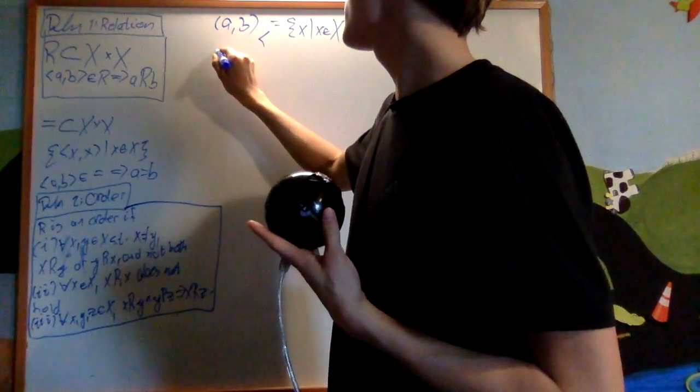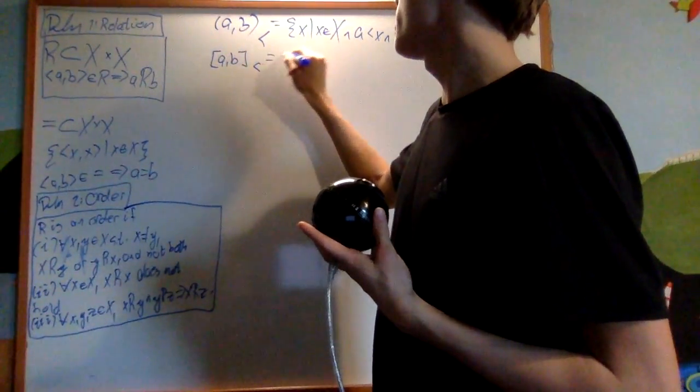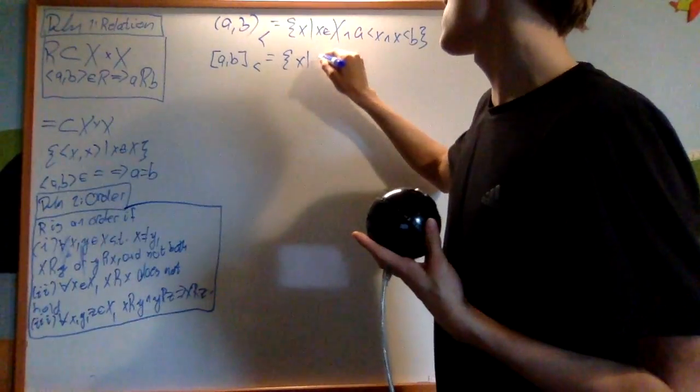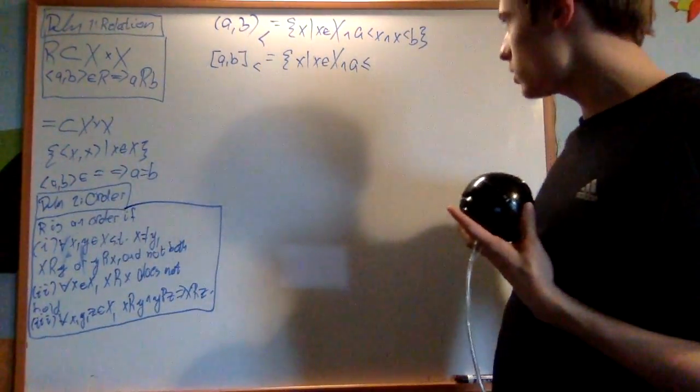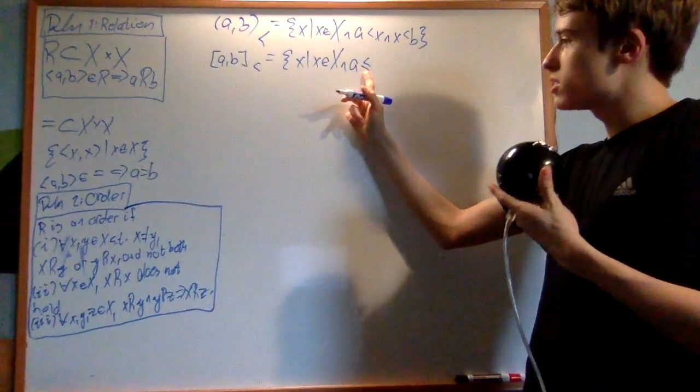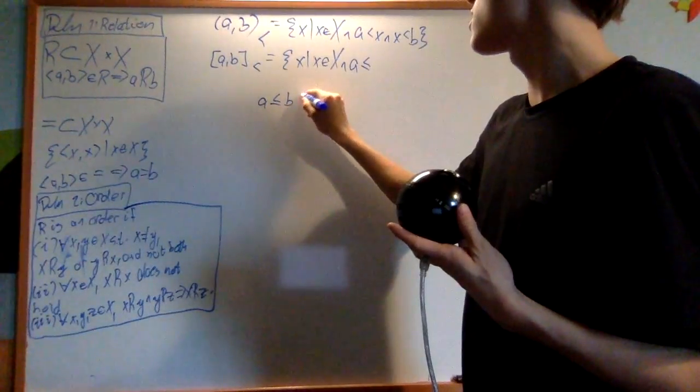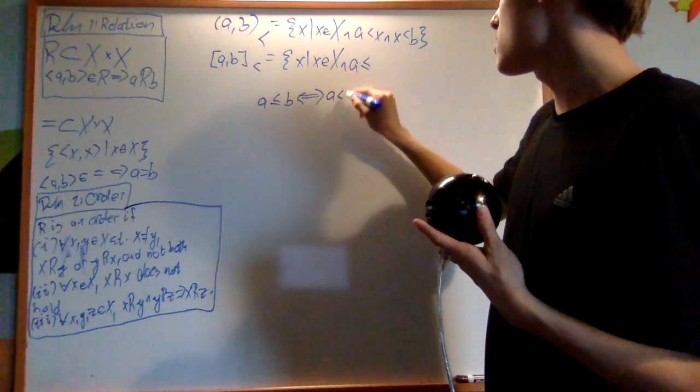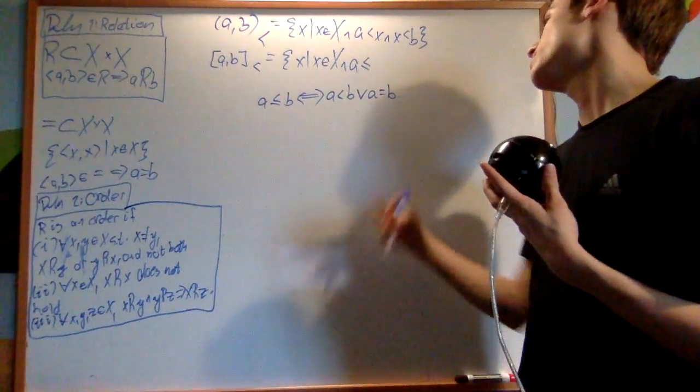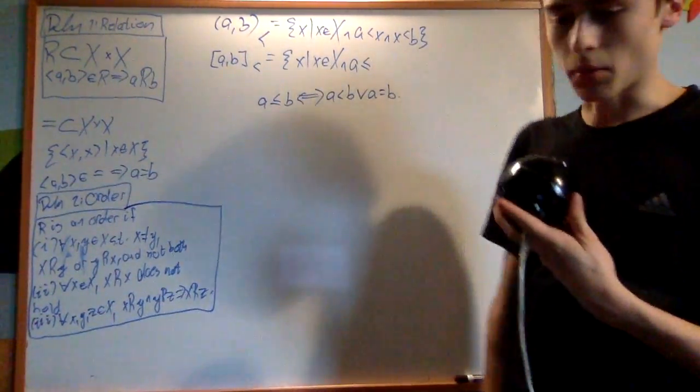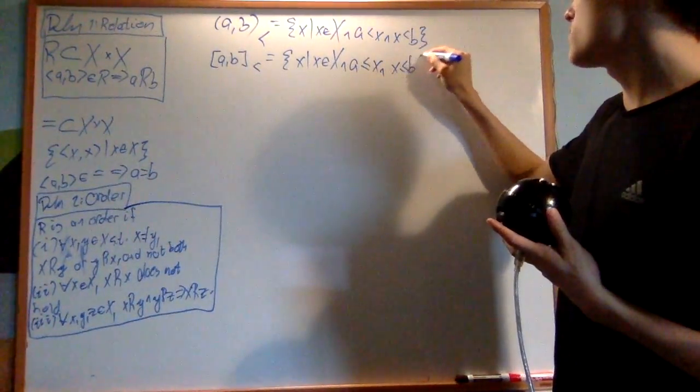And then we also have the closed interval [a,b] on an order, which is the set of x such that x is in X and a is less than or equal to x and x is less than or equal to b. So let's define this. a is less than or equal to b if and only if a is less than b or a is equal to b, which is just very simple.